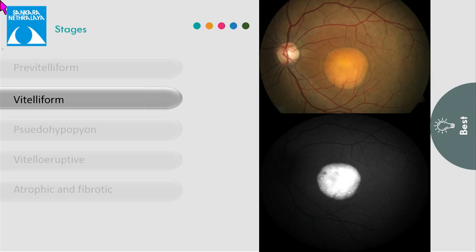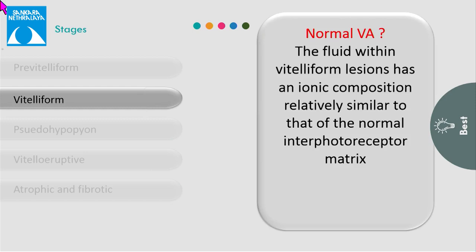The size of this lesion is inversely proportional to the age of presentation. This patient generally has normal visual acuity, the reason being that the vitelliform lesion has an ionic composition relatively similar to that of normal interphotoreceptor matrix.